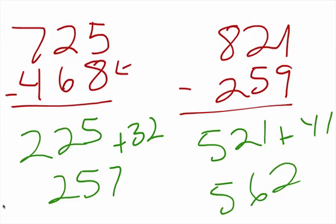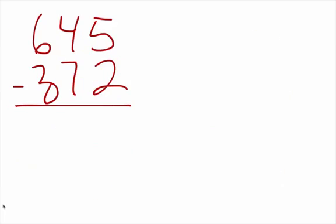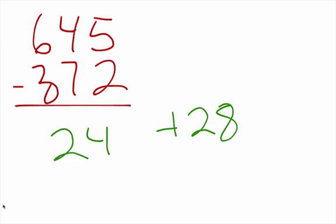This is all in our head. If you practice, you'll get it. 372 is how far from 400? It's 28. So plus 28. We have 645 minus 400, which is 245, and 245 plus 28 is going to give us 273.